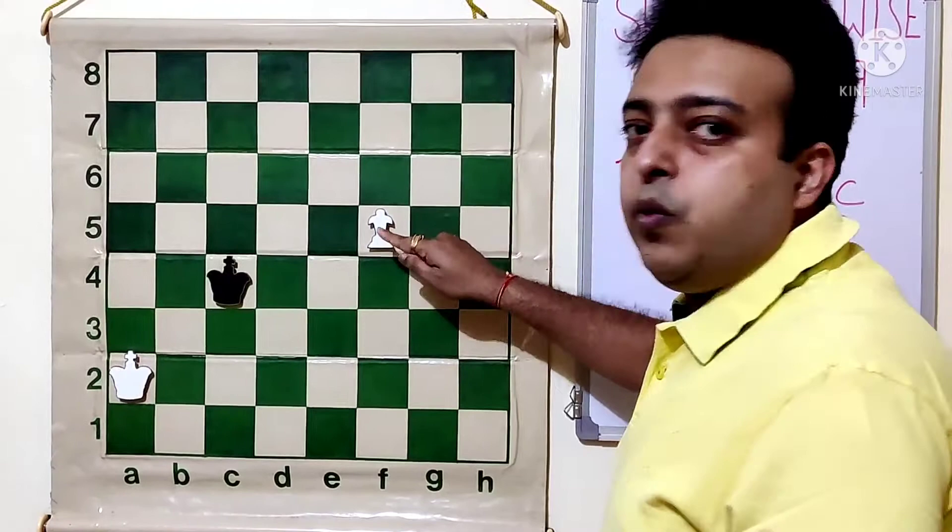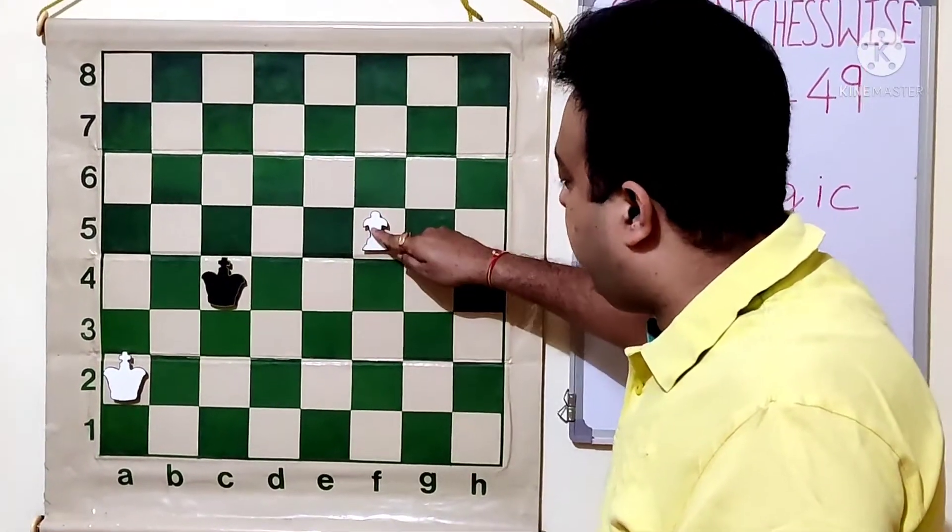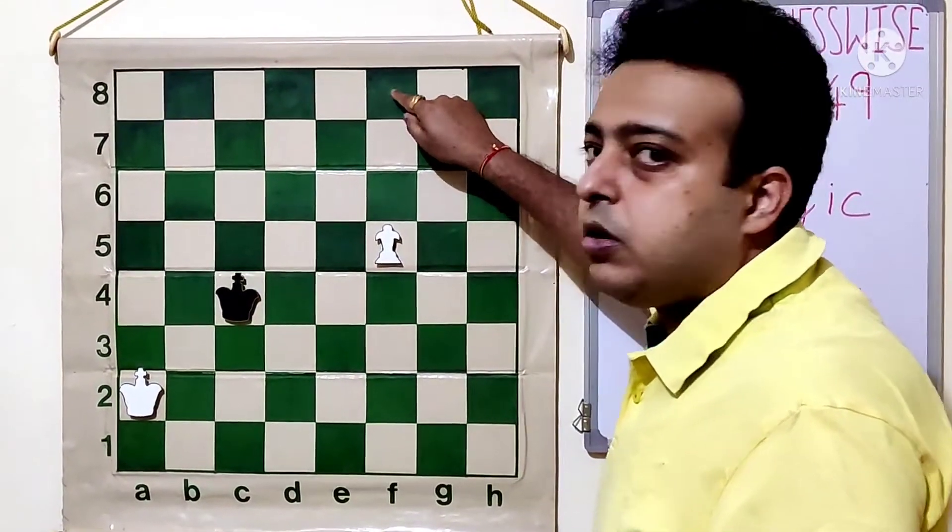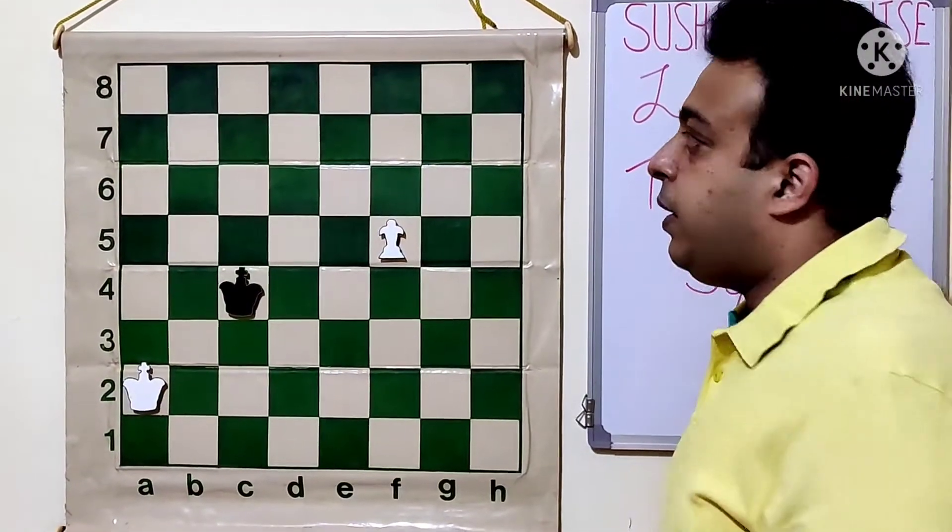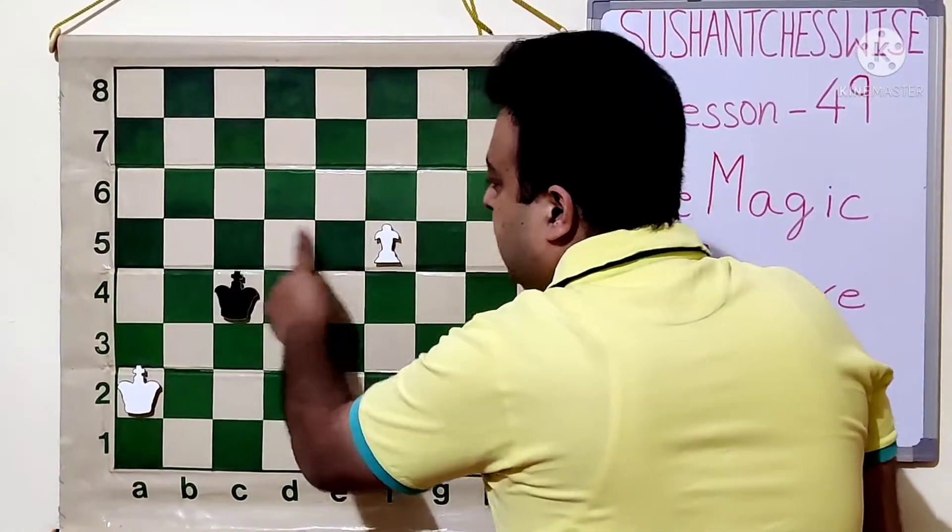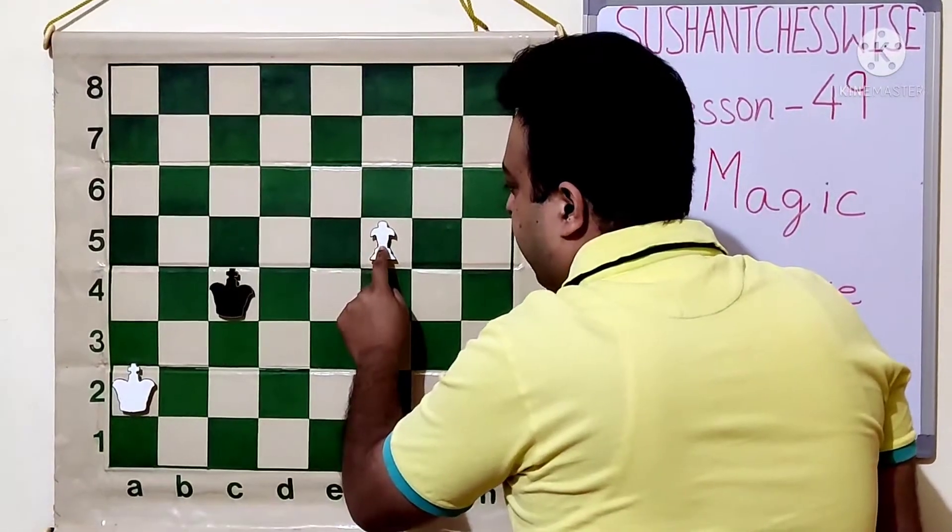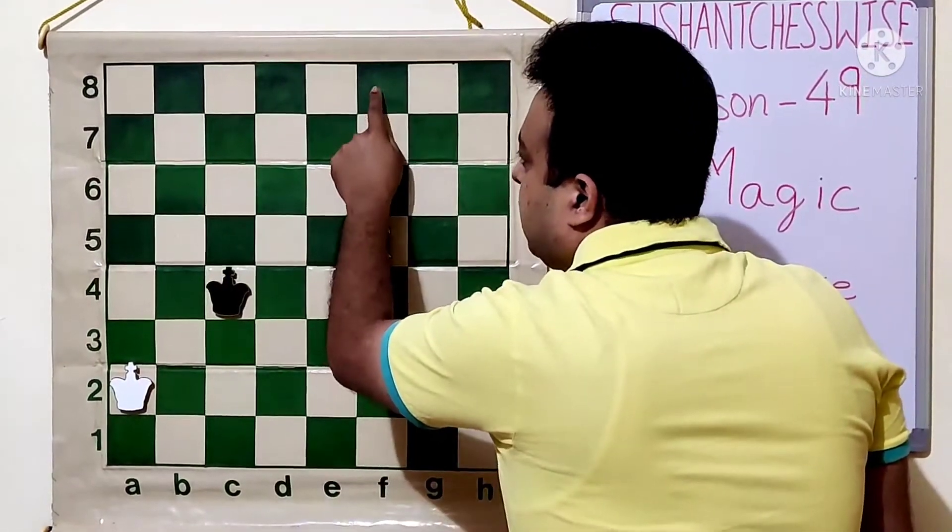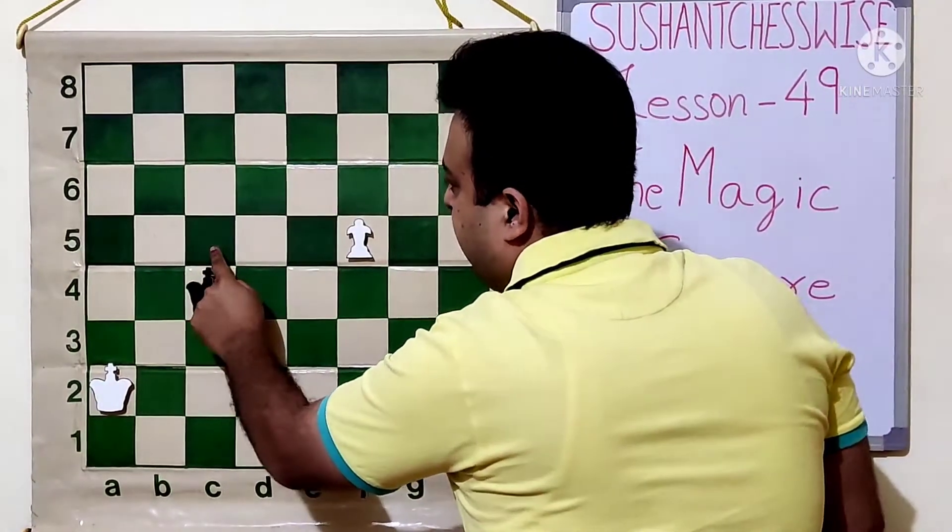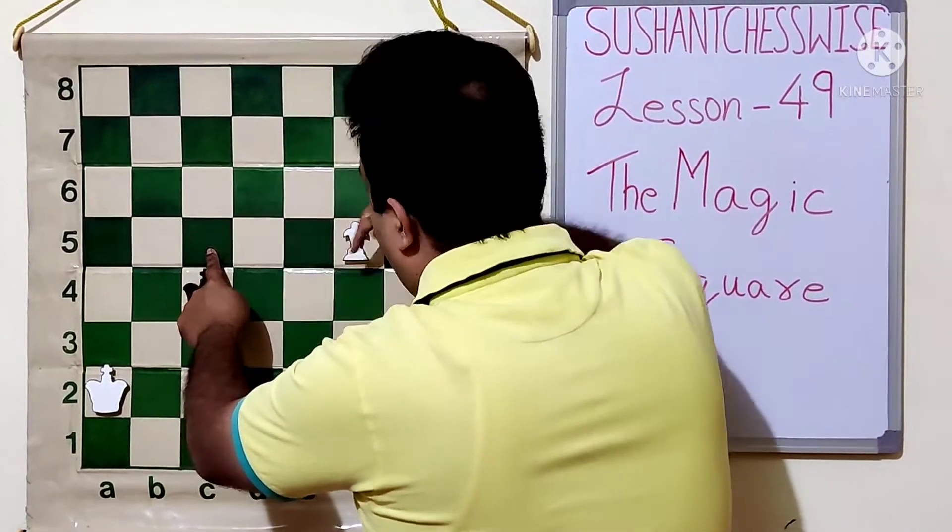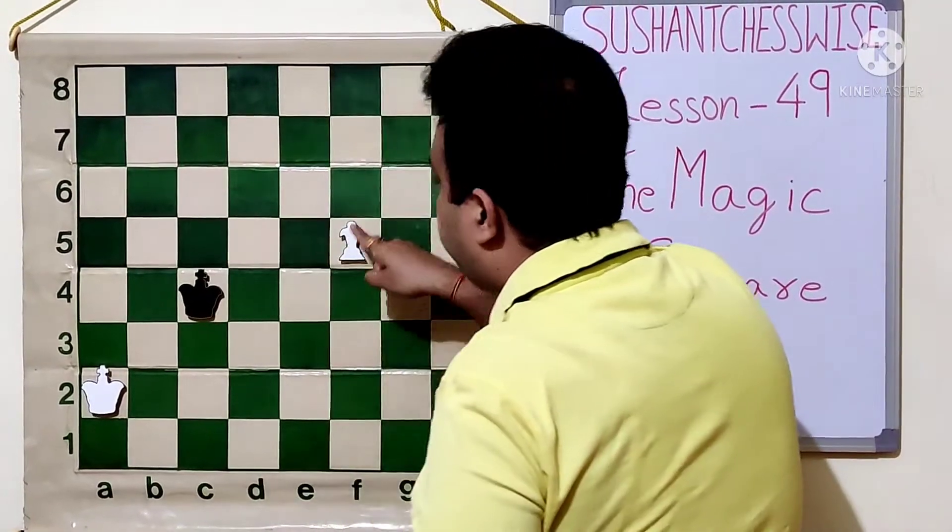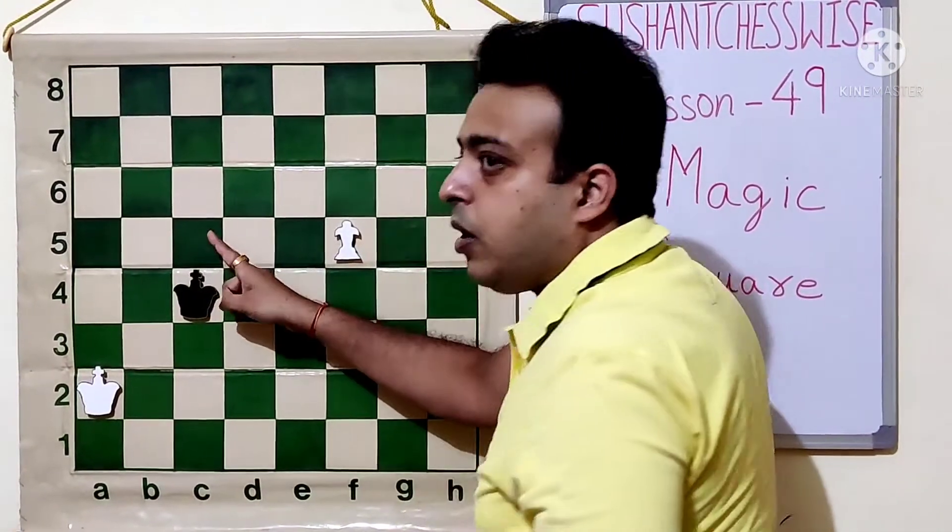First, identify the queening square of the pawn. See the pawn is on F5 and it will become queen on the F8 square. Now from the queening square, we draw a diagonal backwards till the pawn's line. So see this pawn is on the fifth rank. We come back to the pawn's line which is on the fifth rank. So we got three points of the square and we can just take a diagonal like this. So we'll get this square.